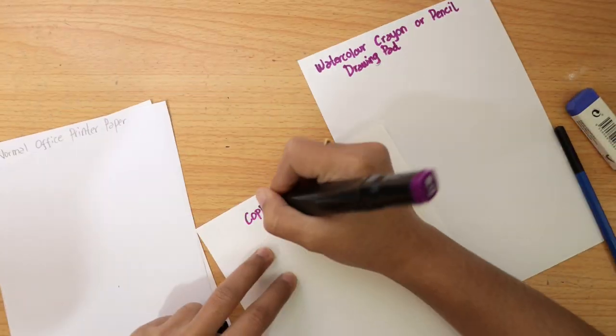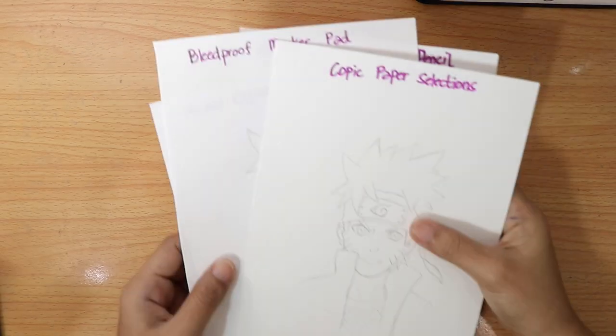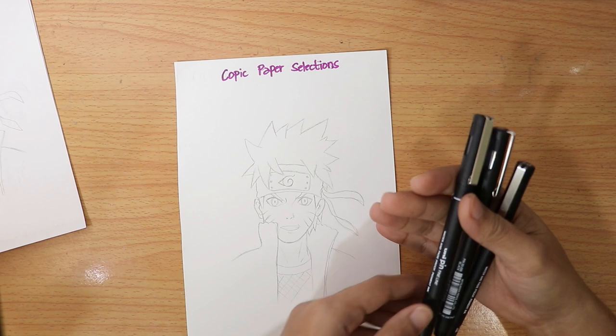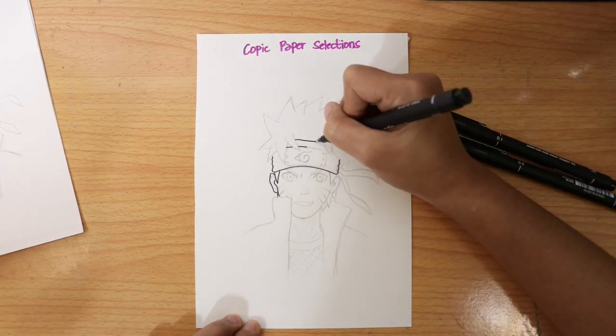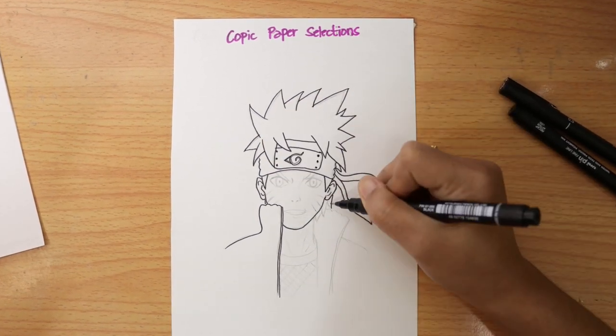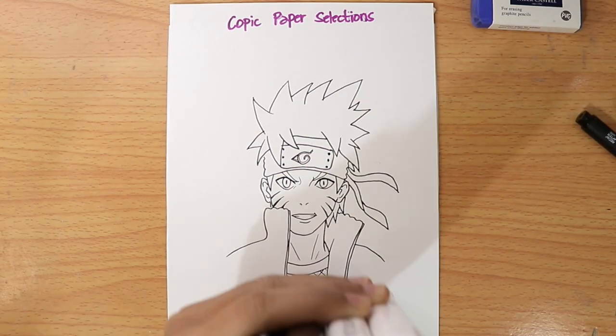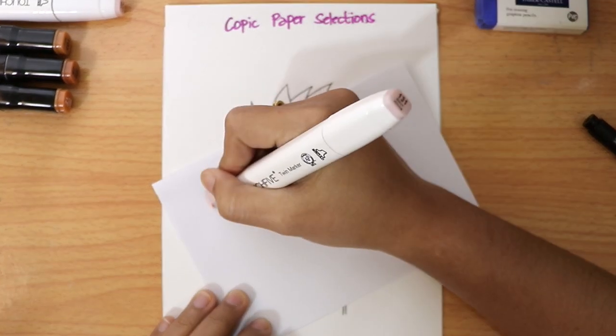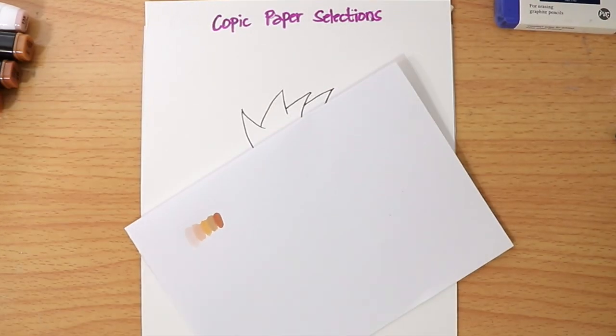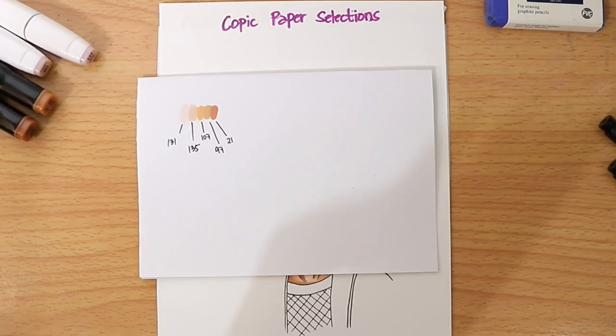So first let's put a label on every single paper and also a little sketch for the sample. Now that the papers are ready let's start with the lines. I will be using same color markers on every paper for us to easily identify the difference between each paper.